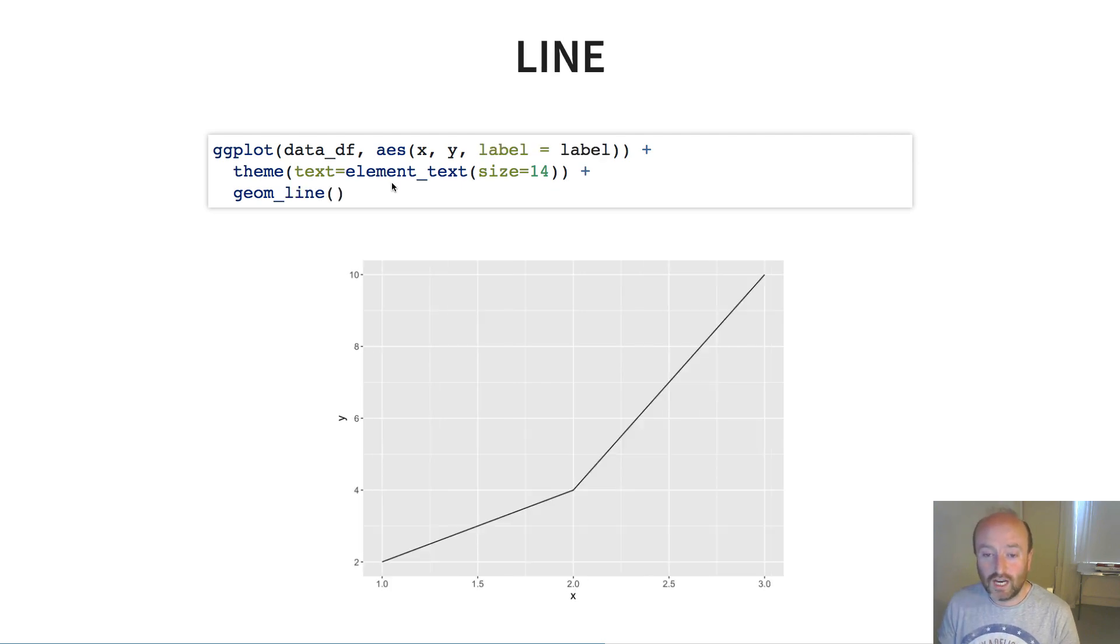I can also change geom_col to geom_line, and I get a line through all of my x, y points. Again, it's not using the label aesthetic here.